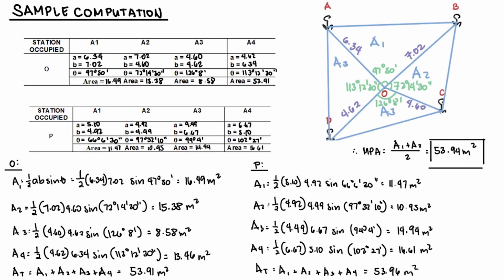And now, the final area of the field is just the mean value of the two computed areas. So 53.91 plus 53.96 over 2 will get 53.94 meters squared. And that is the area of our arbitrary field.